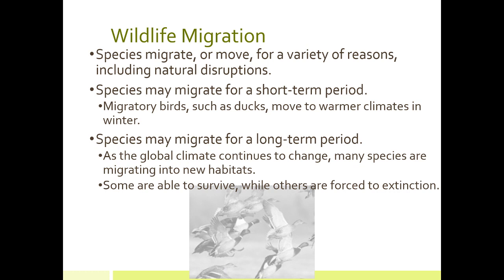Wildlife migrate — we know this. They move for a variety of reasons, but they also move due to natural disruptions. Some species migrate for a short-term period, like migratory birds and ducks. They move to warmer climates in the winter and mate in certain areas. But there are also species that migrate on a longer term. As we see more global climate change occurring, many species are going to new habitats. Some can actually survive in those new habitats, but a lot of them are also being forced to extinction. You're also getting species moving into new habitats where the native species is now being forced out because of competition.